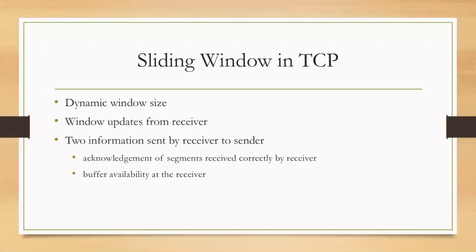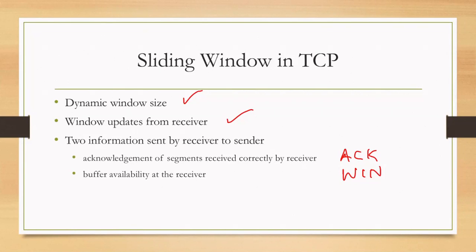TCP uses dynamic window size and window updates are received from the receiver. One is the acknowledgement received, which is the next sequence number expected by the receiver, and the buffer window size, which is how much buffer is available at the receiver — how many bytes the receiver can accept next. This information is sent by the receiver to the sender.